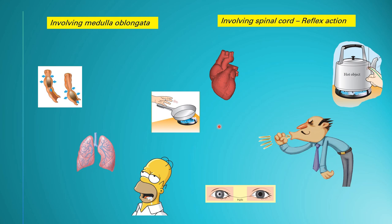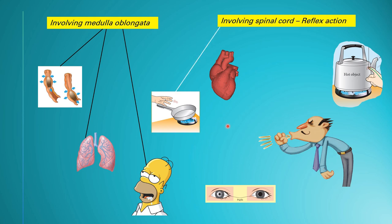Here are the answers. Peristalsis involves the medulla oblongata because it happens 24 hours a day. Breathing also happens unconsciously and continuously, so it involves the medulla oblongata. Salivation or secretion of saliva also happens slowly all the time, so it involves the medulla oblongata.